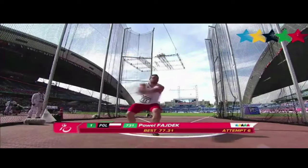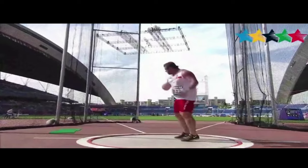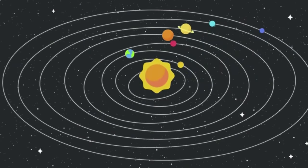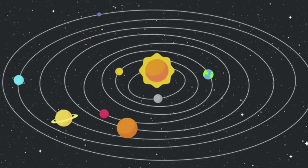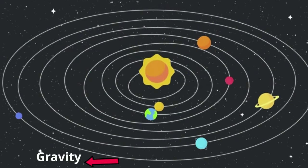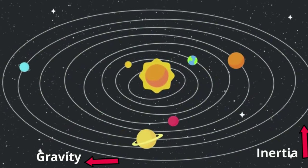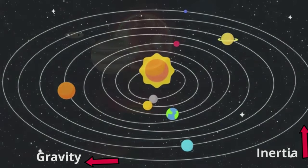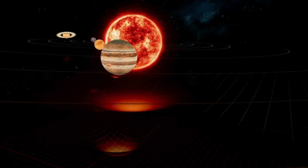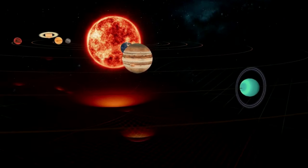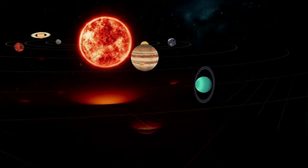As a hammer thrower spins, when he releases the ball it will travel in a straight line. But the handle — and him holding onto the handle — acts like gravity and keeps the hammer spinning in a circle. In a similar fashion, gravity and inertia work together to keep the planets in orbit. The gravitational force is pulling the planet inward, and the planet's inertia is trying to make it move in a straight line, creating a circular or elliptical orbit around the Sun.